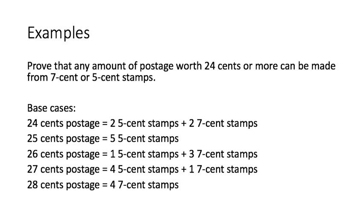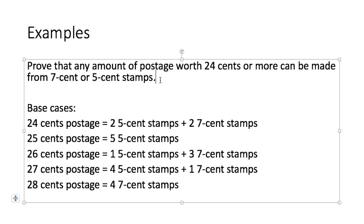Now let's see one application example. Prove that any amount of postage worth 24 cents or more can be made from 7-cent or 5-cent stamps. So now we first need to figure out how many base cases we need to have. If you think about it, if you add 1 cent, if you can form that postage, you add 1 cent more, you can get it from the sum of the older combinations but add a 5-cent stamp, then you can get a new one.